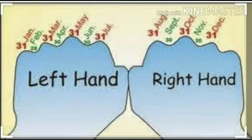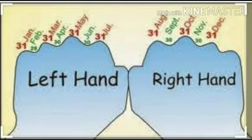Now see this diagram very carefully. January, jo ki upper curve mein hai, has 31 days. Then February, niche curve mein hai. March, upar curve mein hai, 31 days. April, niche hai, 30. May, 31. June, 30. July, 31. Then we will move to right hand.